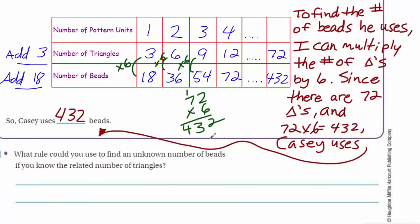Now, it does say, what rule could you use to find an unknown number of beads, if you know the related number of triangles? That's interesting, because isn't that what we just did? It's asking us for the rule, the rule that we could use to find an unknown number of beads, which is what the problem was that we had, if you know the related number of triangles, which in this problem, we knew the number of triangles was 72. So, the rule is just going to multiply the number of triangles by six, to find the number of beads. So, that's the rule. So, if I were to say the rule, I think I would write it just like that, multiply by six. We could multiply the number of triangles by six to get the number of beads. There's a full sentence. But, in essence, that's what the problem is asking, and we've answered it.